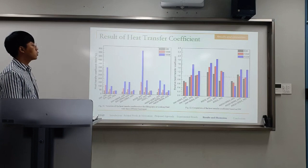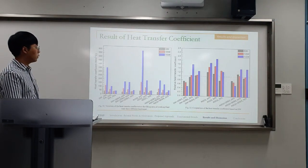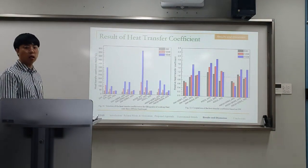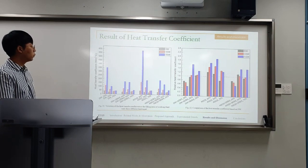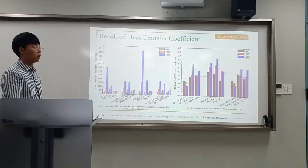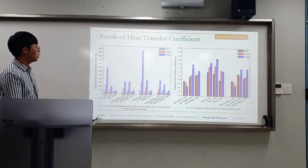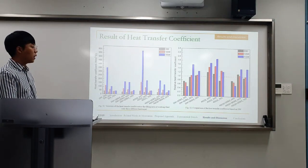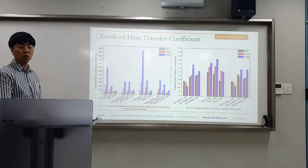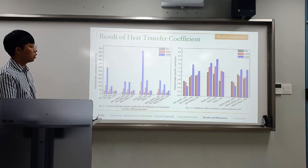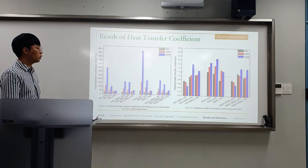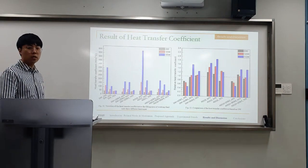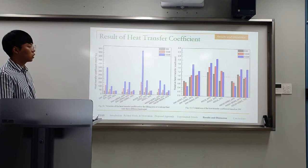The results of heat transfer coefficient are shown in figures 11 and 12. It is obviously shown that the heat transfer coefficient decreases with increasing heat input, and it has a tendency to rise with increasing fill ratio. The nanofluid with SDDS had lower heat transfer coefficient than distilled water in the case of 30% fill ratio. However, the nanofluid with SDDS had similar or higher heat transfer coefficient than distilled water when the fill ratio exceeds 30%.